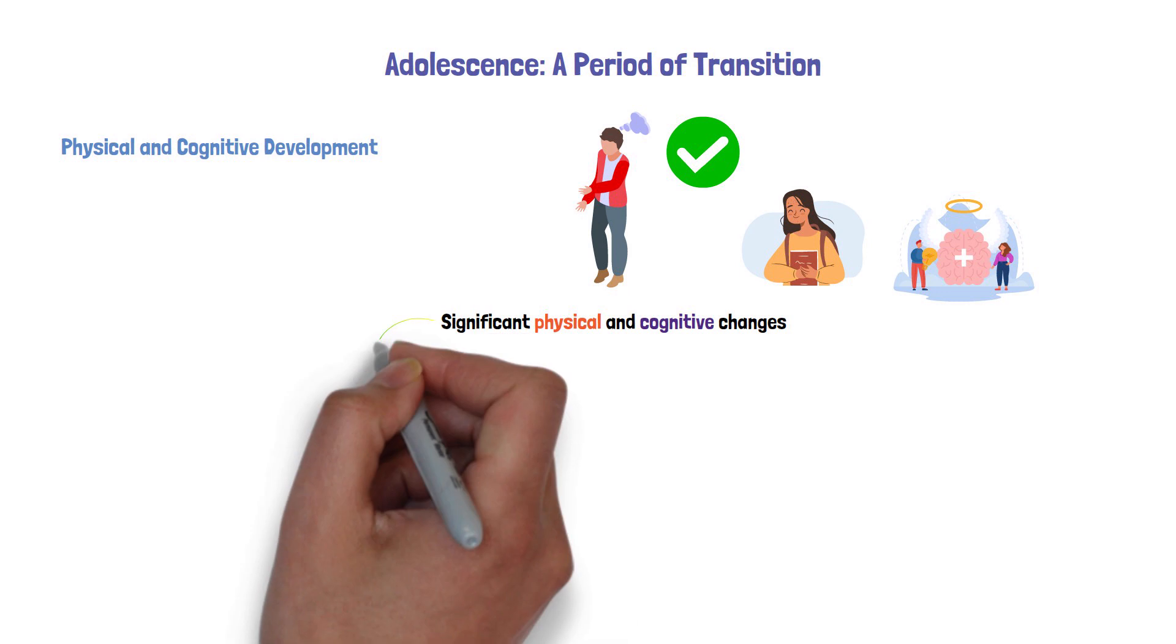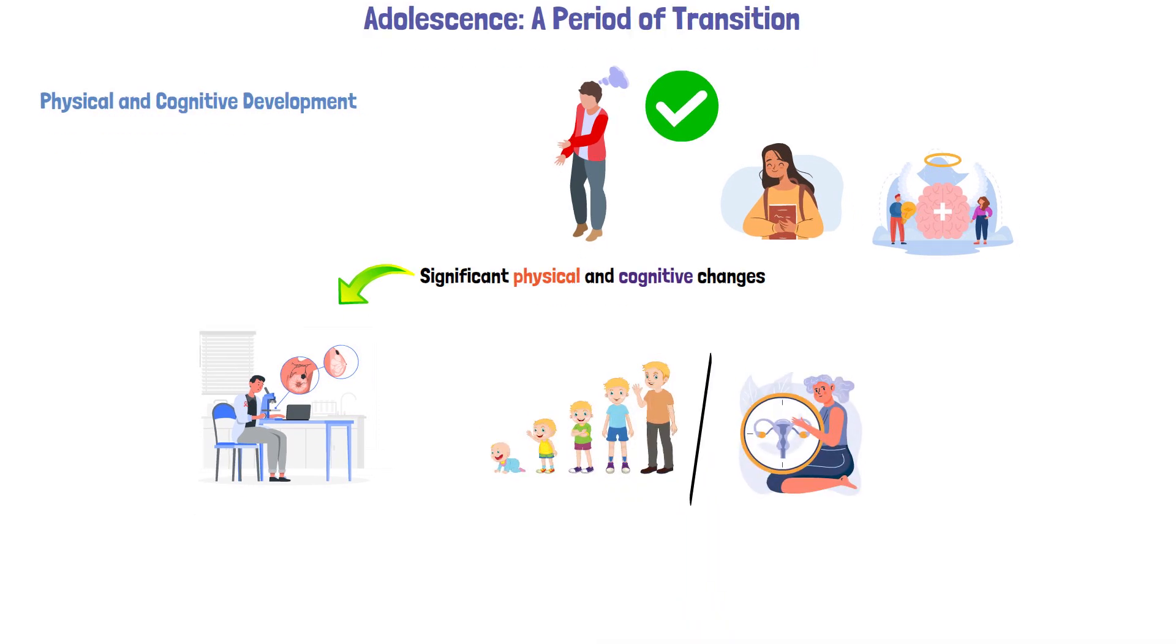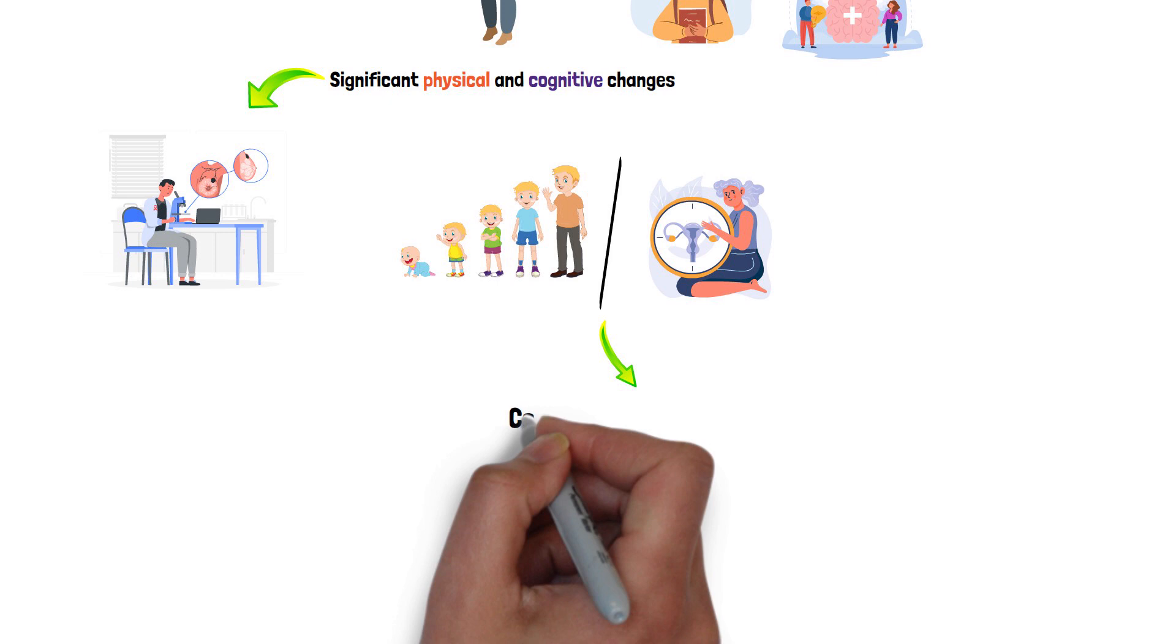This period brings about a host of pubertal issues and health concerns. The physical changes are not just about growth spurts and hormonal fluctuations. They also entail complex interactions with environmental factors.